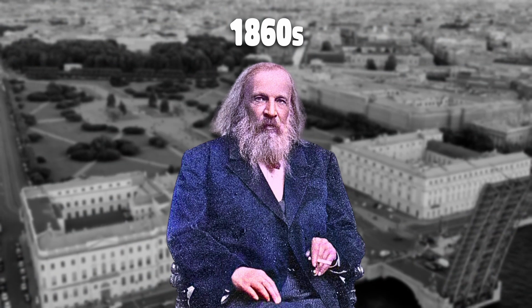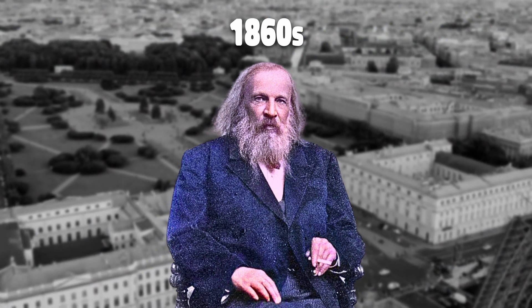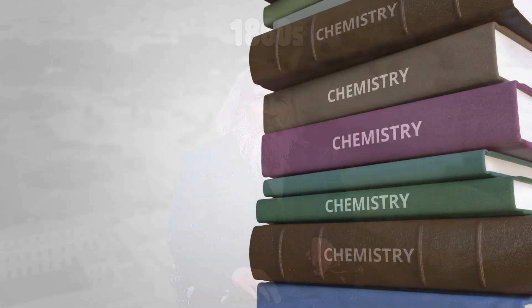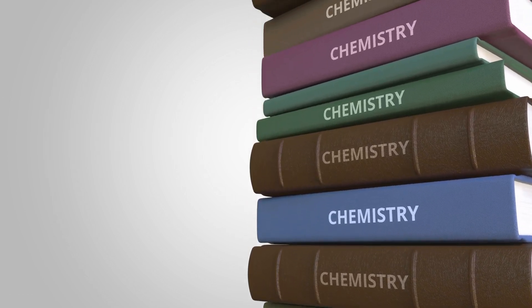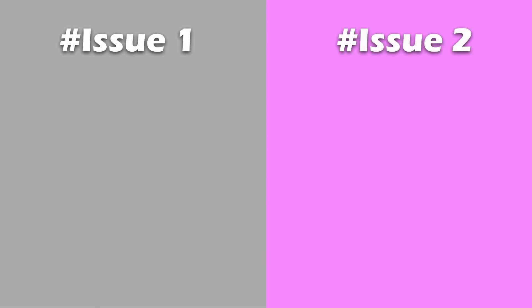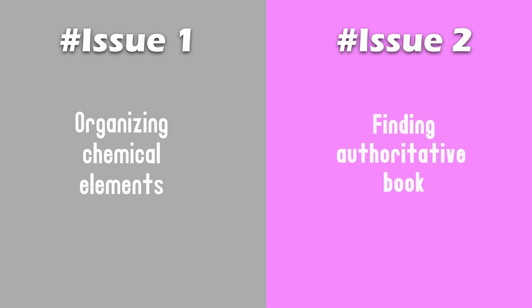During the 1860s, Mendelev was a popular lecturer at St. Petersburg University in Russia, but there were no authoritative modern organic textbooks that could be used as staple reading material. Mendelev decided to write his own and tackle two primary issues: organizing the disparate natures of the elements and solving the dilemma of an authoritative book.